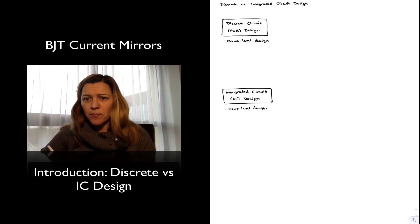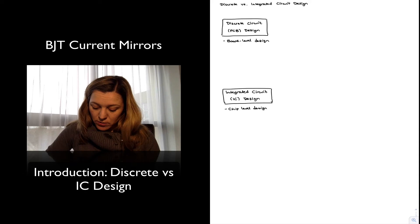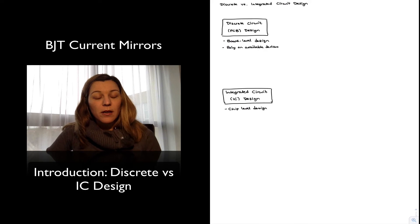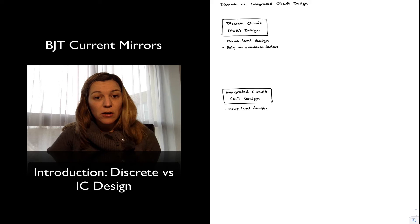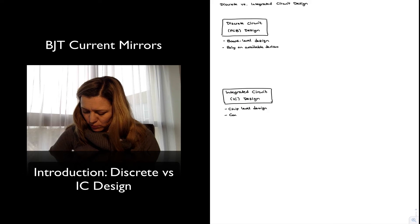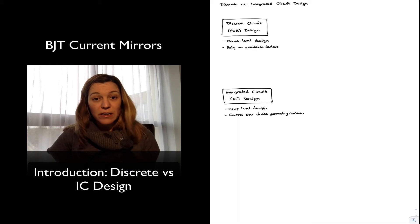When we are doing discrete design, we rely on the range of devices that are available. For example, you can use resistors in the values that are available — standard values or combinations of series and parallel combinations. Whereas in integrated circuit design, you can design the geometry of your devices to generate virtually any value that you need; you have control over the device geometry, which is related to the values for those devices.